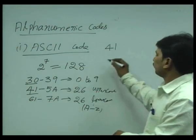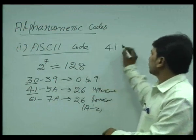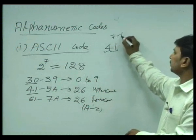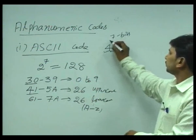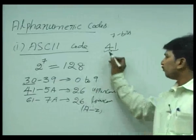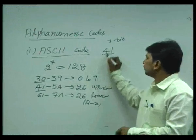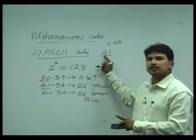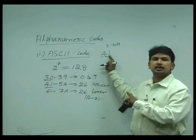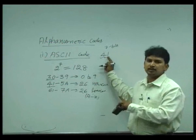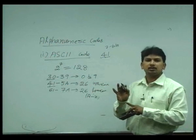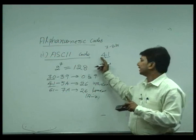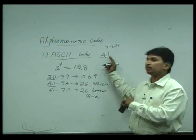41 is represented here. 41 is equal to 7 bits actually. This is a total of 7 bits. The digit 4 is represented by 3 bits and the next one, 1, is represented by 4 bits. So total 7 bits are explained. It is represented by 3 bits and then the next number is represented by 4 bits.